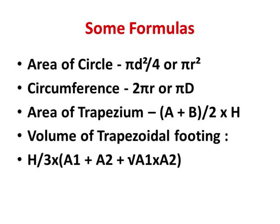The circumference of a circle is 2πr or πd. The area of a trapezium is (a+b)/2 × h. The volume of a trapezoidal footing is h/3 × (top area + bottom area + √(A1 × A2)), where A1 is the top area and A2 is the bottom area. This is the formula for calculating the volume of a trapezoidal footing.